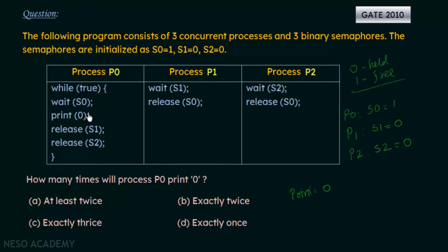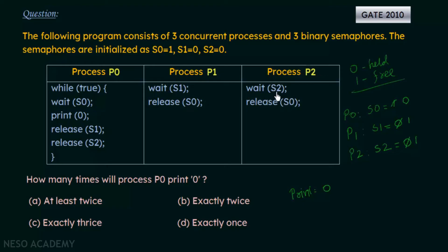After printing, P0 releases semaphores S1 and S2, setting both to 1 — meaning they are now free. So S1 becomes 1 and S2 becomes 1. Now if we look at processes P1 and P2: P1 checks wait S1, and S1 is 1 — free, so it can execute. S2 in process P2 is also 1 — also free. So either P1 or P2 can execute. Let's say P1 executes first.